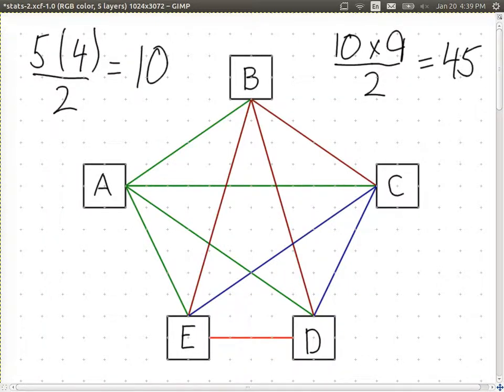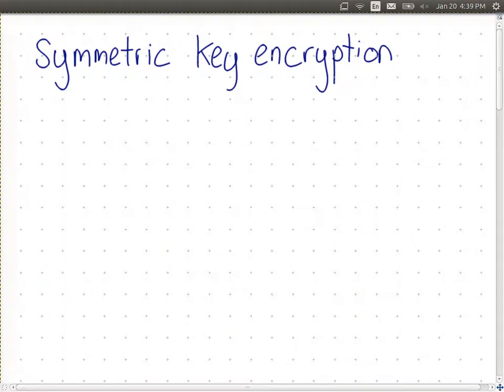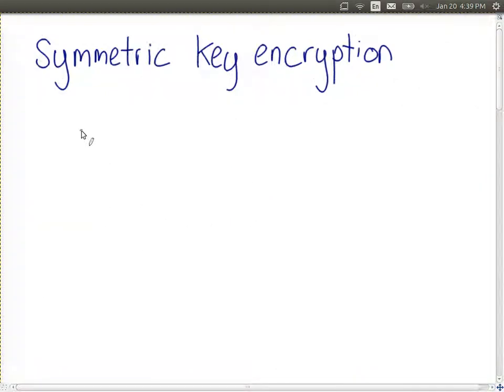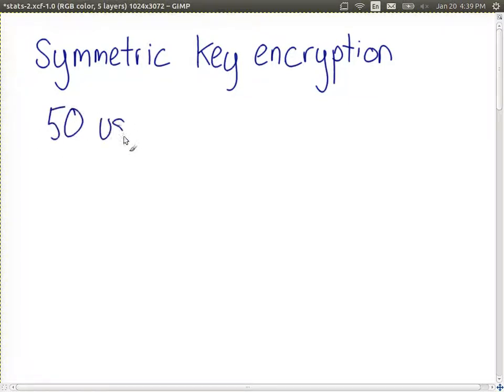As a third example, let's say we have symmetric key encryption amongst a set of users, and in our system we have 50 users. So 50 people, and with symmetric key encryption, each user may want to encrypt data to send to another user. So each pair of users needs a shared secret key. So how many keys do we need in this system?